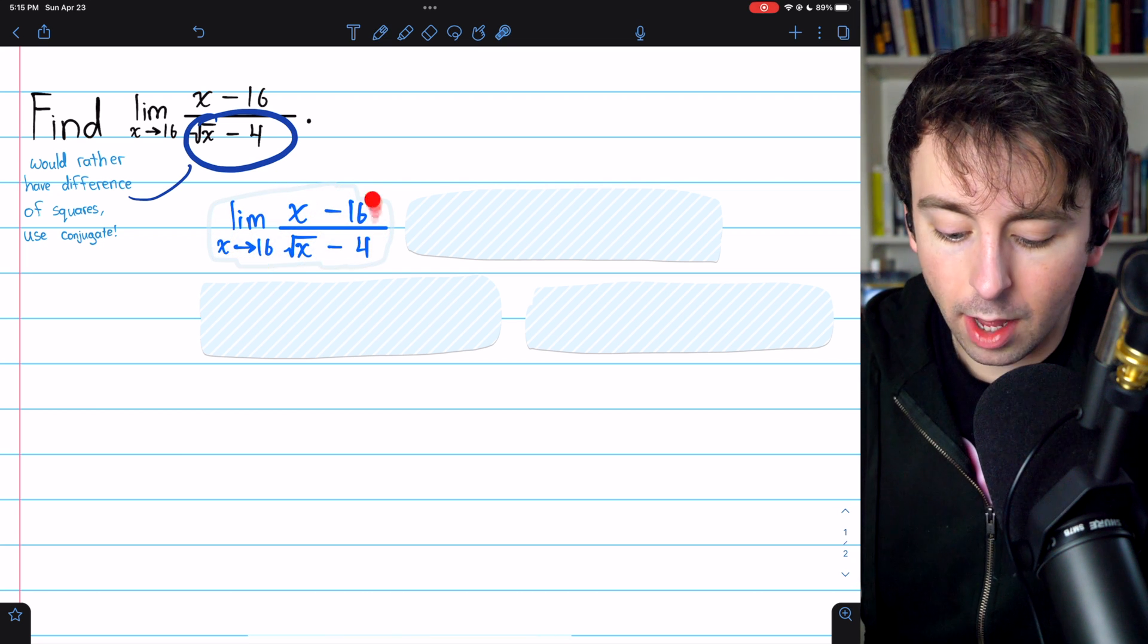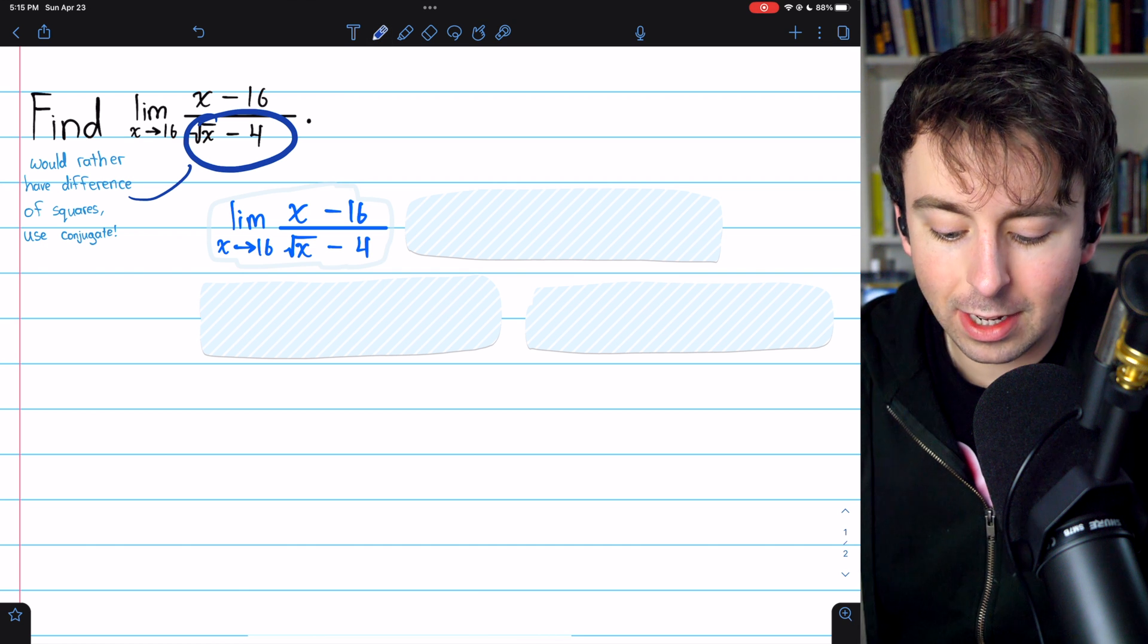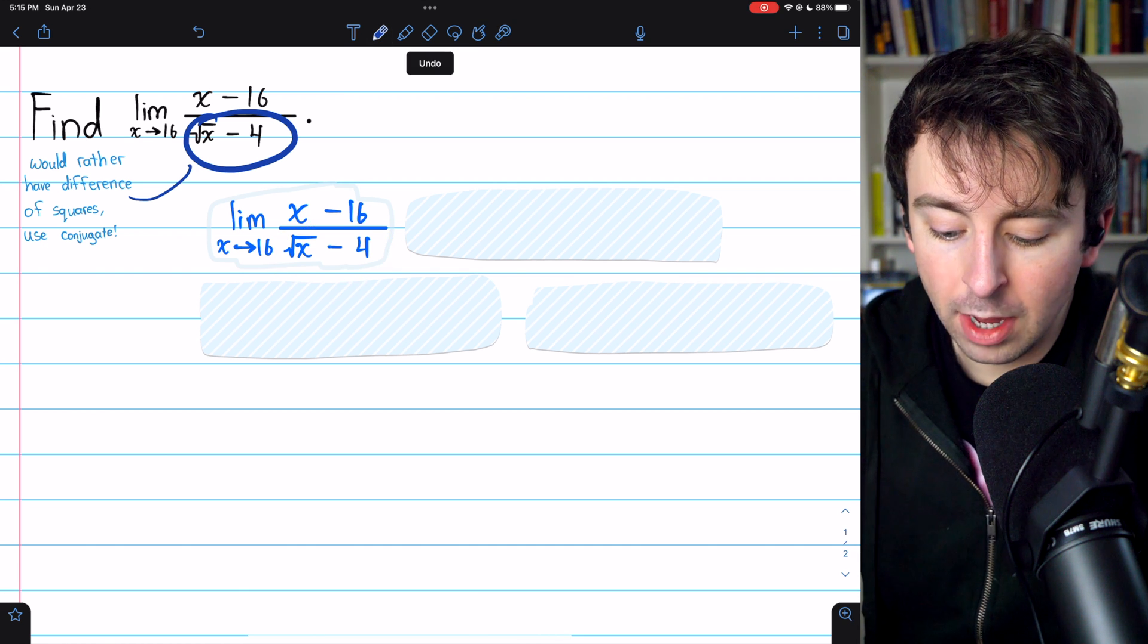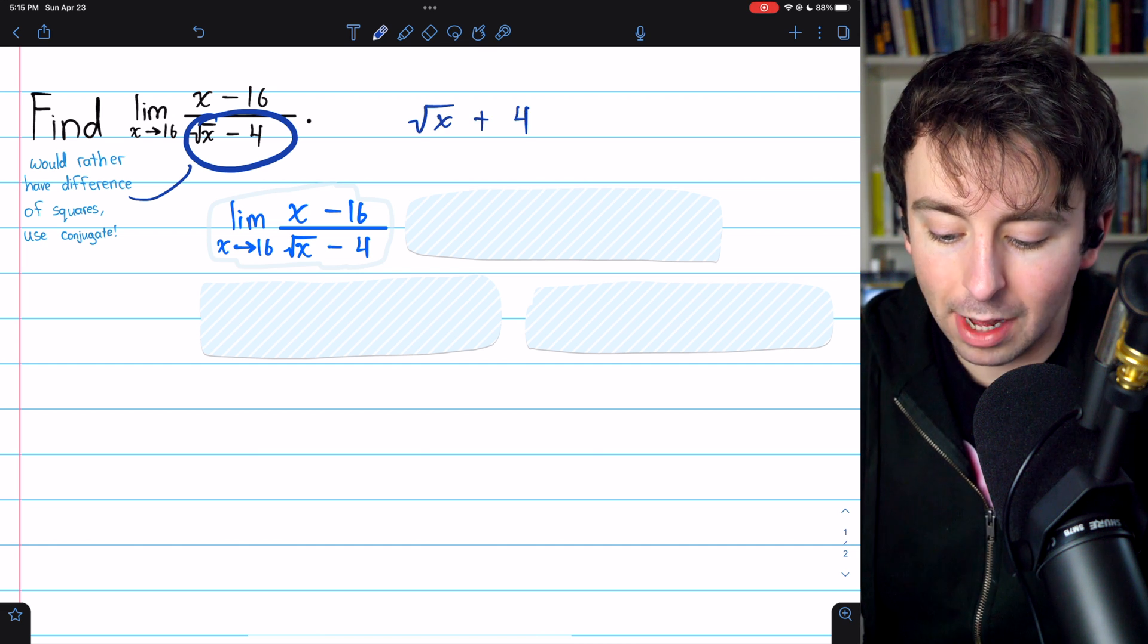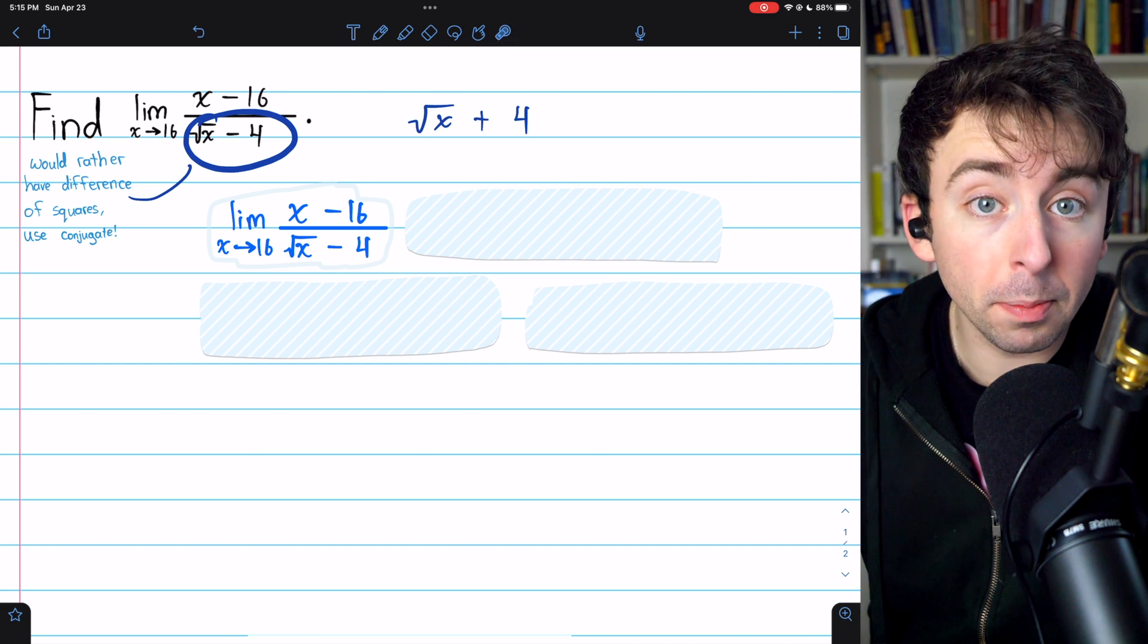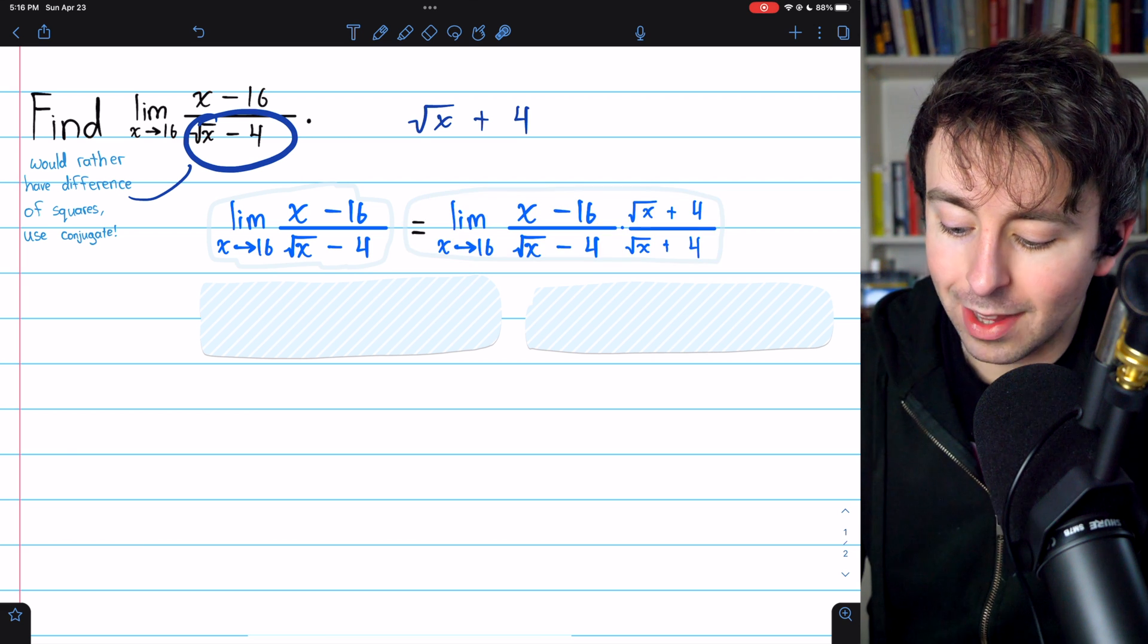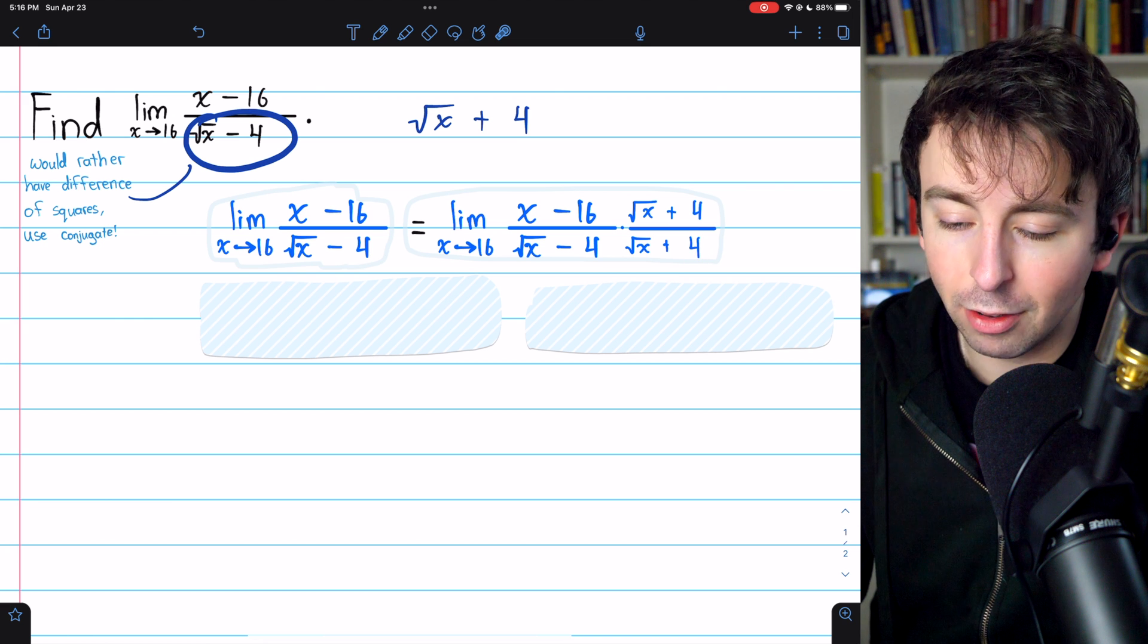So we'll take our limit of x minus 16 over root x minus 4 as x approaches 16. What is the conjugate of root x minus 4? Well, conjugate just means flip the sign in the middle. It's going to be root x plus 4. So we'll multiply by 1 in the form of the conjugate. We multiply the top by root x plus 4, and the bottom by root x plus 4.